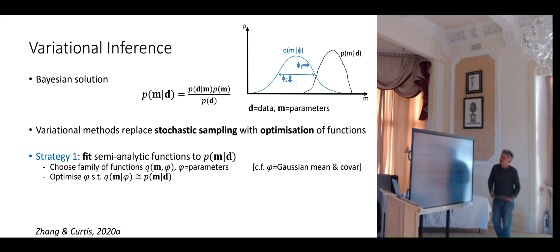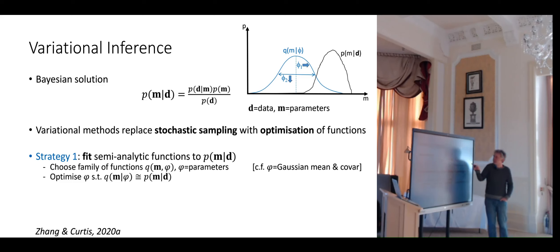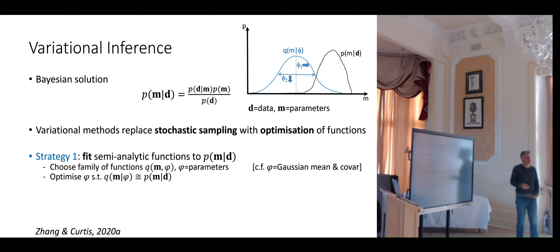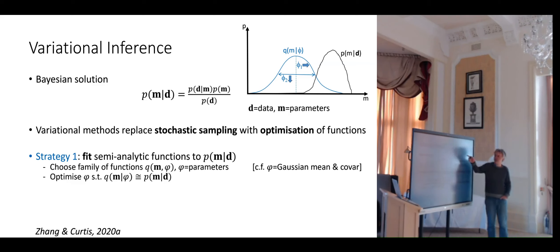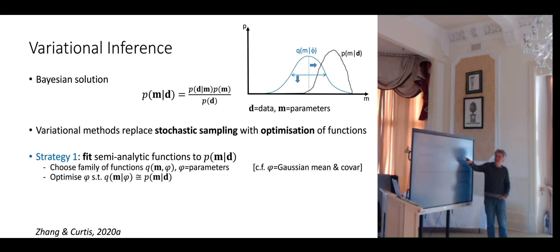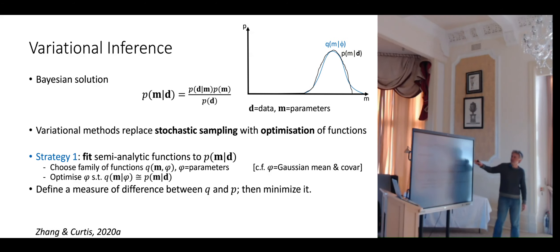Here's an example: say this is the posterior distribution — it has a Gaussian-ish form. We start with one element from the family of Gaussians, parameterized by mean and standard deviation. In an iterative optimization process, we decide how to change these parameters to better fit the posterior — the mean has to move, and the standard deviation has to decrease to make it narrower. We update and iterate again until we reach a best approximation. That is essentially how variational methods work — completely different from random sampling.